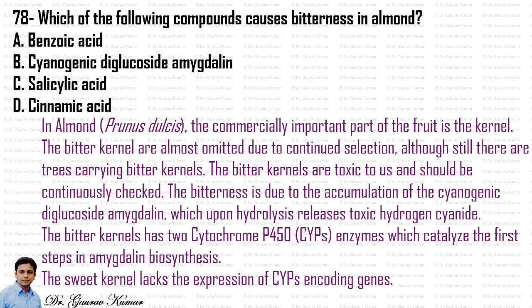The bitter kernels have two cytochrome P450, i.e. CYP enzymes, which catalyze the first steps in amygdalin biosynthesis. The sweet kernels are sweet because they lack the expression of these two CYP450 enzymes involved in amygdalin biosynthesis, and hence the cyanogenic diglucoside amygdalin is not synthesized in the sweet kernels. So the answer is B, that is the cyanogenic diglucoside amygdalin.